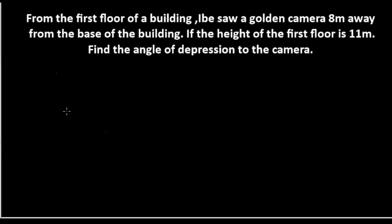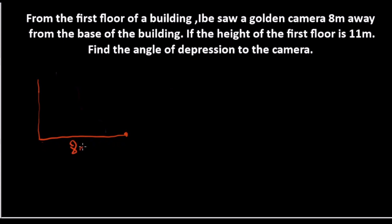Now let's look at this first question. From the first floor of a building, Ibe saw a golden camera 8 meters away from the base of the building. That is, the camera is 8 meters away from the base of the building. Let's pick the base of the building — here's the base of the building. If the height of the first floor is 11 meters where Ibe is actually standing, Ibe stands at a height of 11 meters. Find the angle of depression to the camera. The camera is at this point, 8 meters away from the base of that building.